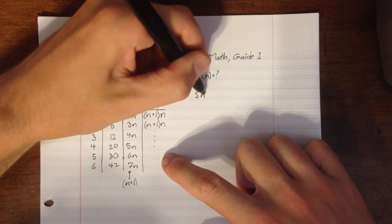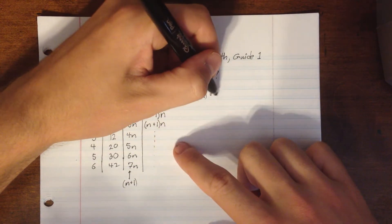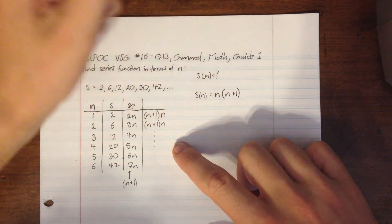So our s of n will equal, we can write this single n first. So it'll be n times n plus 1.